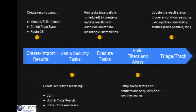To understand the flow for getting up and running with Scumblr: the first step is creating and importing results — basically your assets. You can manually create results one by one or through bulk upload, use a GitHub synchronization task to pull in all source code repositories for your organization, or use the Route 53 sync if you're an AWS user, which pulls in all your DNS entries from Route 53.